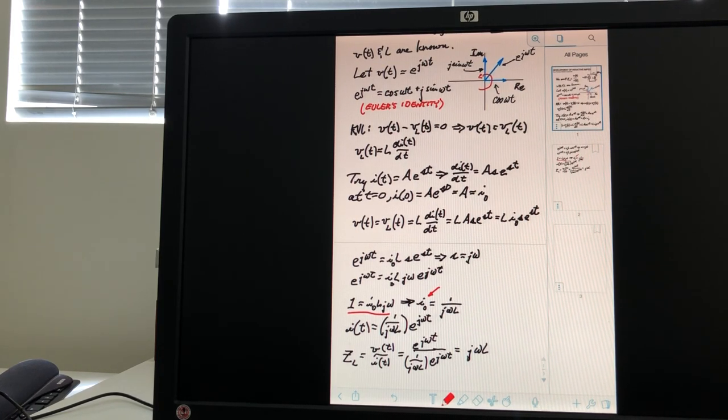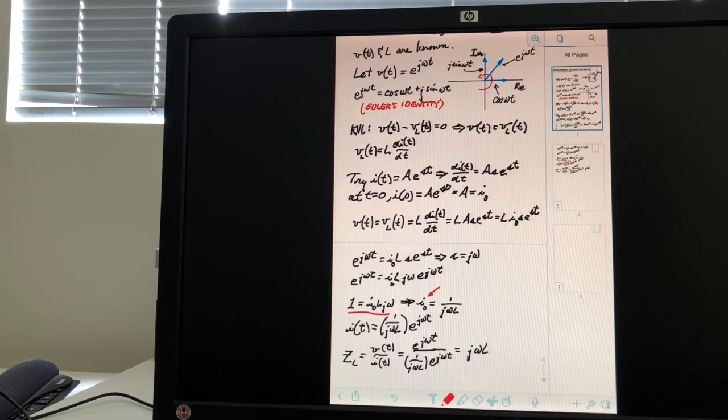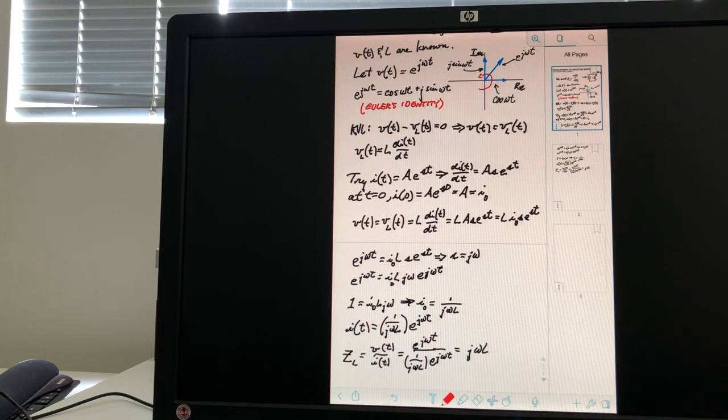again, L, which is a property of the circuit, and omega, which is a property of the forcing function, the voltage source. So, happy now with an expression for I zero. So,